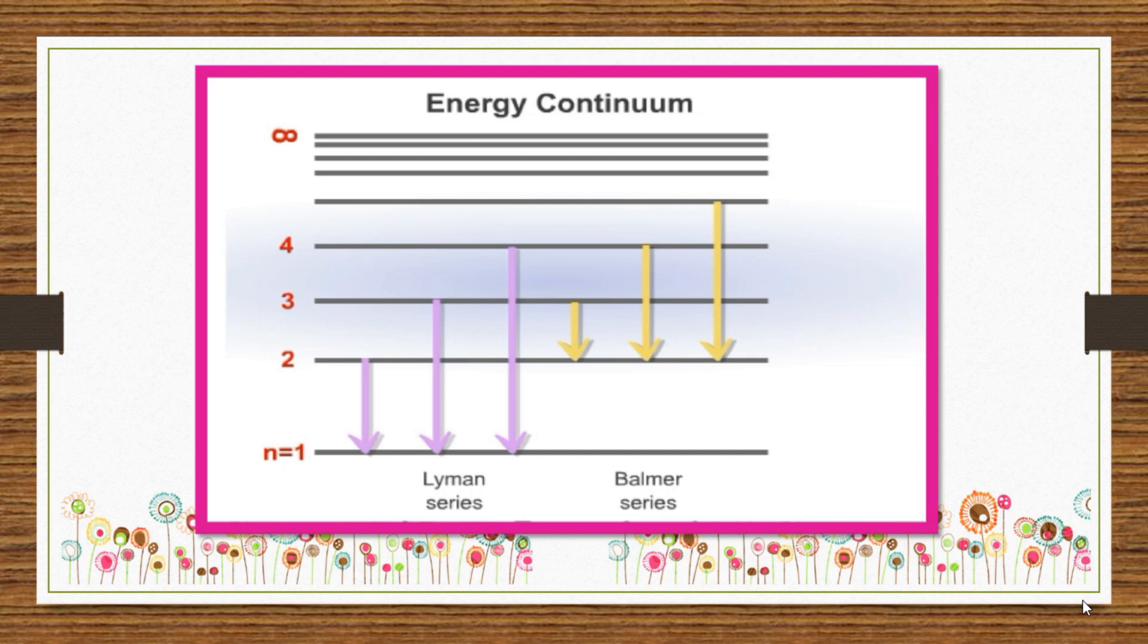A positive proton and a negative electron attract each other. Therefore, the energy of their mutual interaction is strongest when the electron is in the first orbit and they are closest to each other. The larger the orbit, the higher the energy of the electron, because a portion of energy must be supplied to overcome the proton-electron attraction.